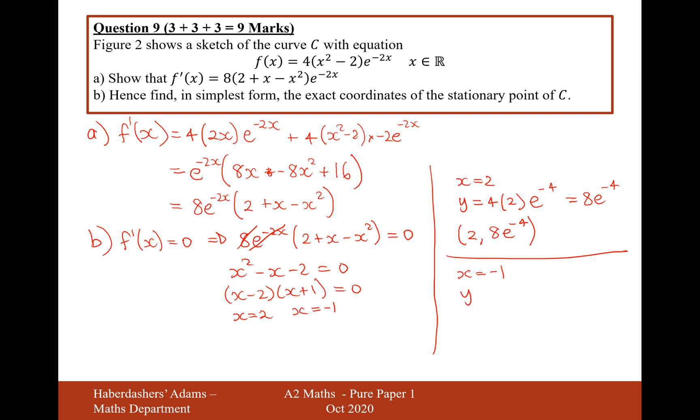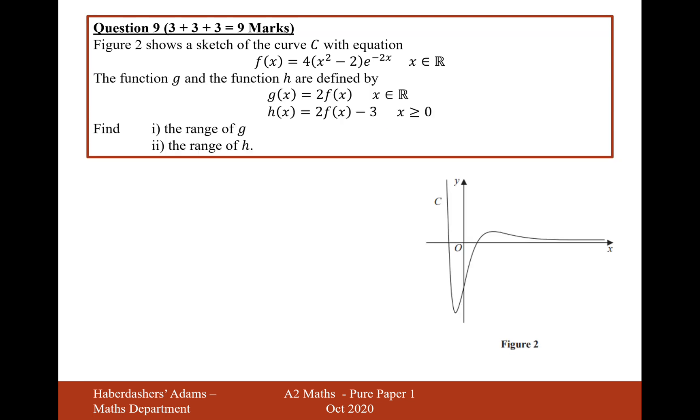And the second coordinate is going to be when x equals minus 1. So that's going to be y equals 4 times 1. Minus 1 squared is 1. Minus 2 is minus 1 now. And then it's going to be e to the 2 because minus 1 times minus 2 is just 2. So it's going to therefore be the coordinate of minus 4e to the 2. So it's minus 1, minus 4e to the 2. And there we are. That's the final answer for both of our sets of coordinates here.